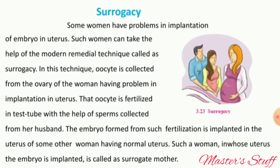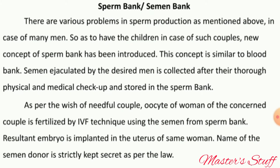In surrogacy, the ovaries of the woman are collected. These ova are then used to fertilize in a test tube. After fertilization, an embryo is formed and then implanted into the uterus of another woman who has a normal uterus. This woman is called the surrogate mother.